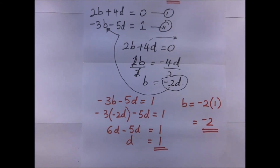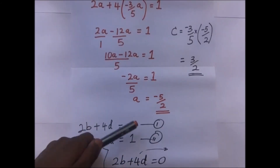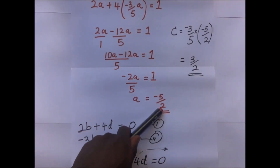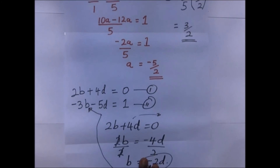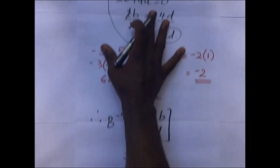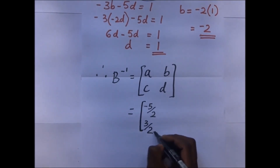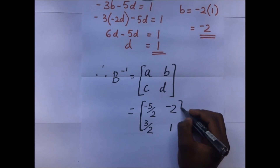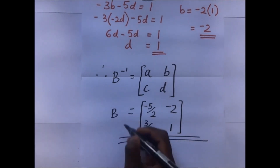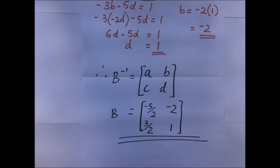So our final values are: A = -5/2, B = -2, C = 3/2, and D = 1. That is our inverse matrix and that is how we find the inverse of a matrix using the identity matrix method. This brings us to the end of this video. Thank you for watching — please subscribe to the channel and share on other platforms. This is Example Academy, channel Ranga Kuramia.